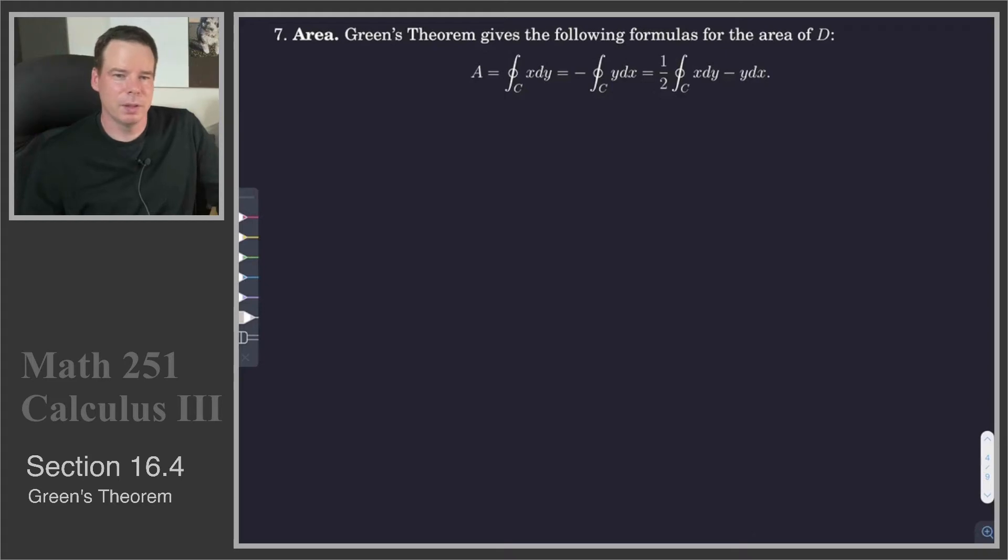We'll now see how Green's Theorem can help us find an area by doing a line integral. So we're sitting in a situation like this. We've got some curve positively oriented.